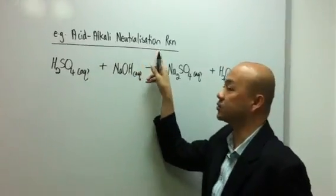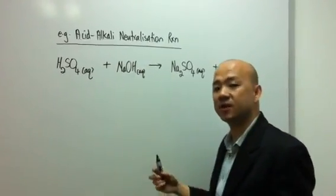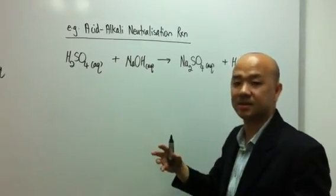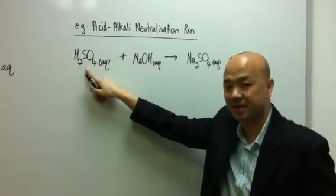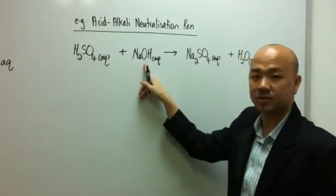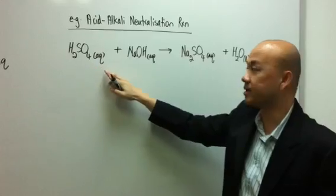Today I'm going to use acid alkaline neutralization reaction. In the previous video, I actually used hydrochloric acid and sodium hydroxide. Today, I choose a dibasic acid to react with sodium hydroxide. Over here, we use sulfuric acid to react with it.